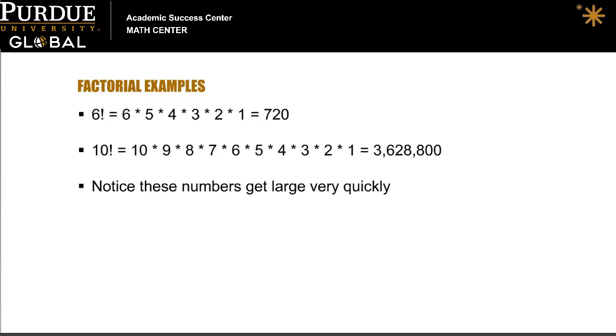Let's look at some examples and see how this works. Six factorial is equal to six times five times four times three times two times one. If you put this into your calculator, you get 720.